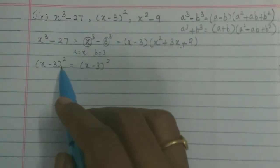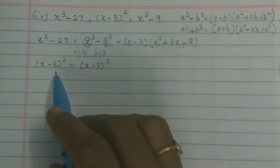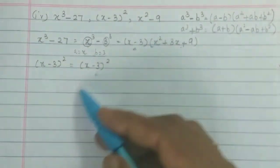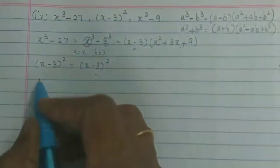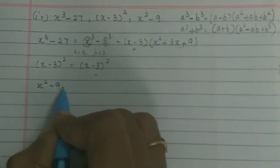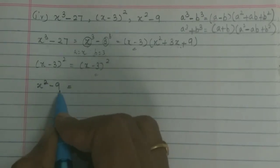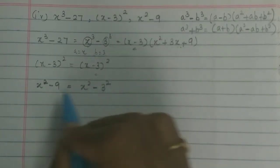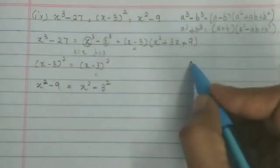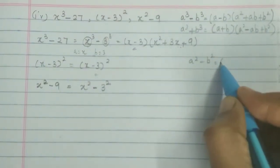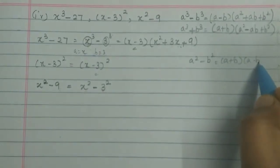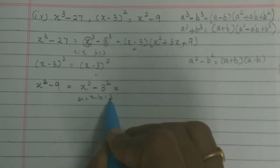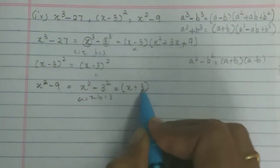The second expression is (x-3)², which expands using the formula (a-b)² = a² - 2ab + b². The third expression is x² - 9, where 9 = 3². Using a² - b² = (a+b)(a-b), we get (x+3)(x-3), where a = x and b = 3.